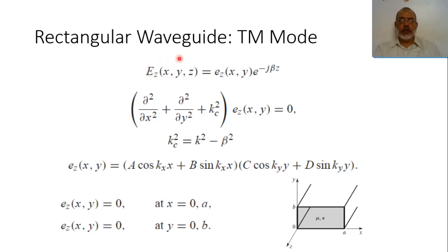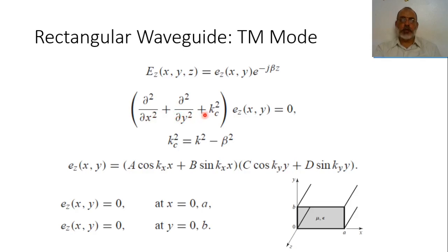This transverse magnetic mode longitudinal component Ez can be represented as the mode equation: small ez as a function of x and y, multiplied by the propagation constant e to the power minus j beta z. The Helmholtz waveguide equation in this case would be: partial squared by partial x squared plus partial squared by partial y squared plus kc squared, times Ez equals 0, where kc squared is k squared minus beta squared.